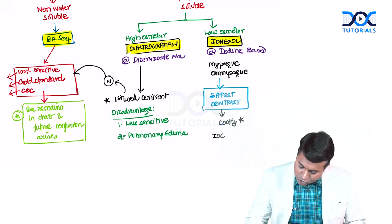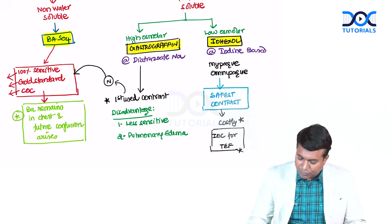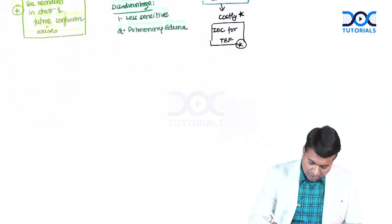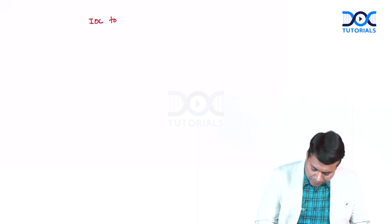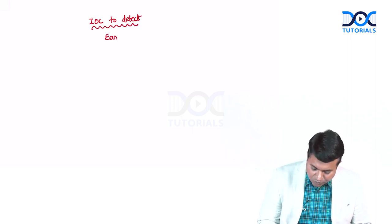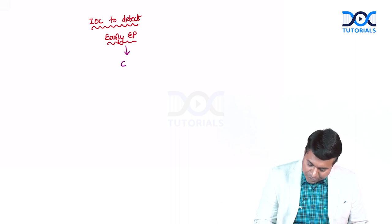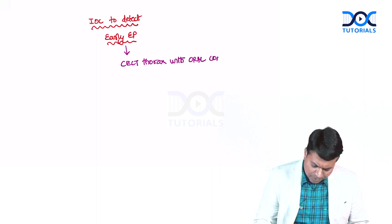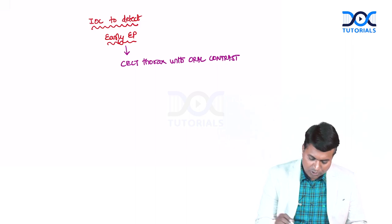Iohexol is the contrast of choice for tracheoesophageal fistula, to be discussed in the next session. The investigation of choice to detect early esophageal perforation is CECT thorax with oral contrast. Please do not get confused on this point.